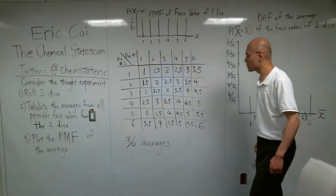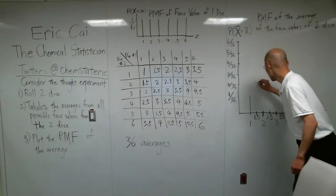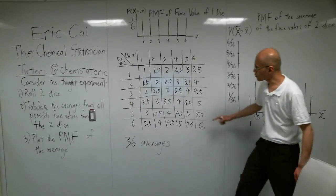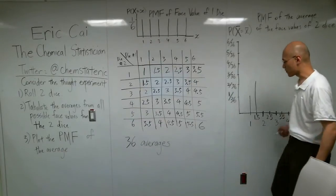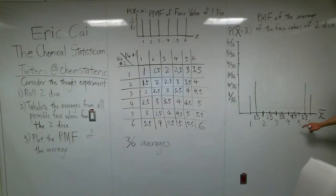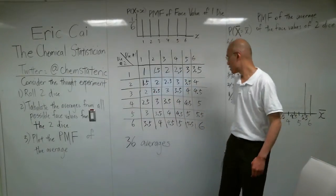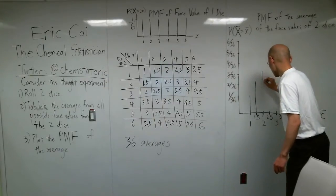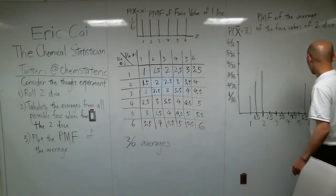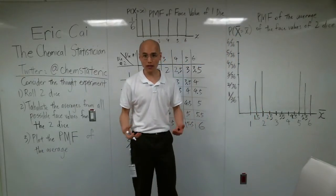What about 1.5? It shows up twice in this table, so its probability is 2 over 36. What about the number 2? Oh, by the way, it's also the same for 5.5, because it shows up twice in this table. So, here is 5.5. What about the number 2? It shows up 3 times in this table, so its probability is 3 over 36. And it's the same thing for 5.